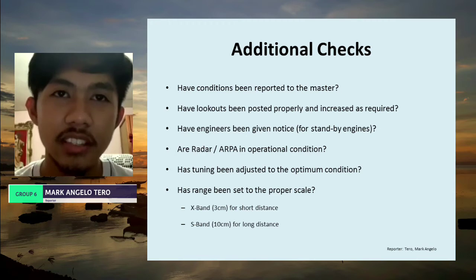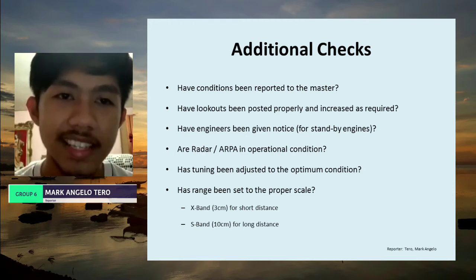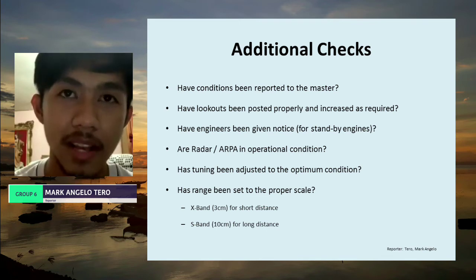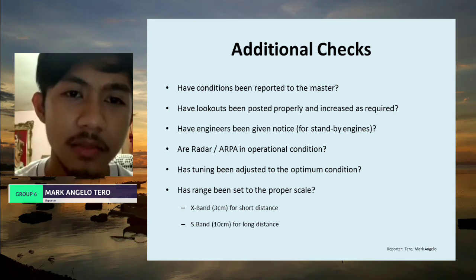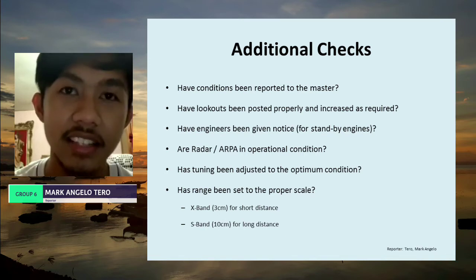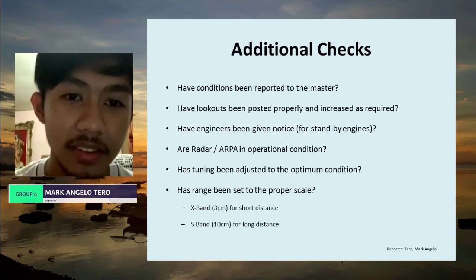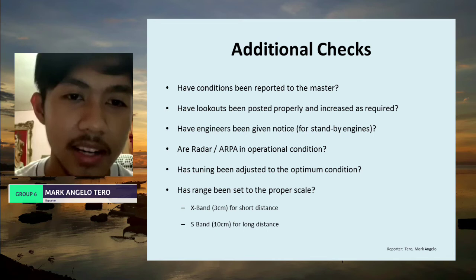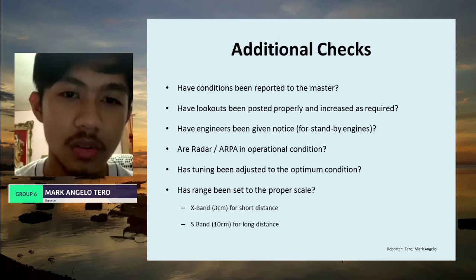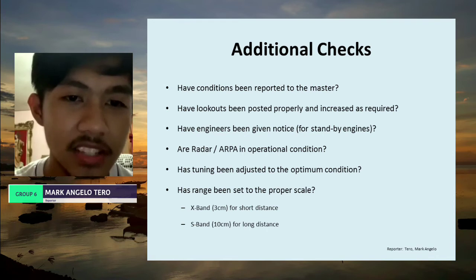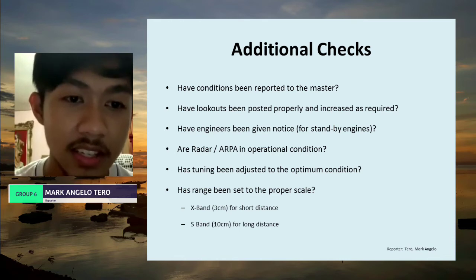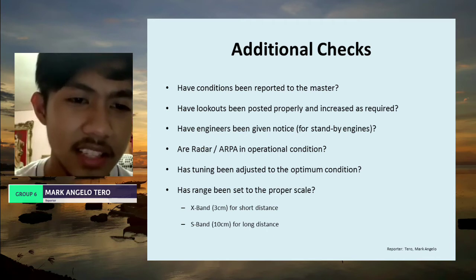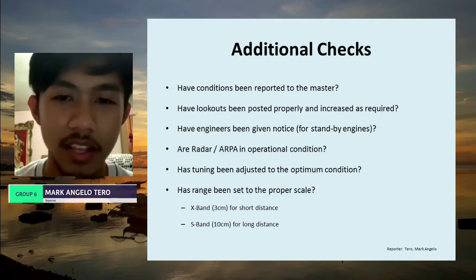This is Tero Mark Angelo presenting additional checks. First: have conditions been reported to the master? Have lookouts been posted properly and increased as required? Have engineers been given notice for standby engines? Are the radar or ARPA in operational condition? Has tuning been adjusted to optimum condition? Has the range been set to the proper scale — X-band (3 cm) for short distance, S-band (10 cm) for long distance?